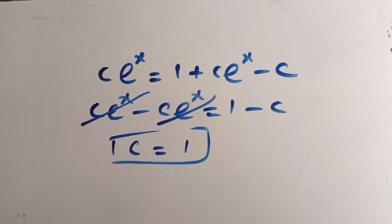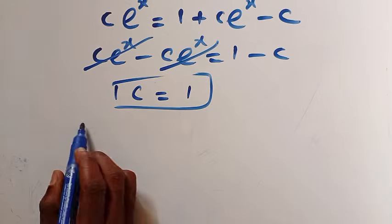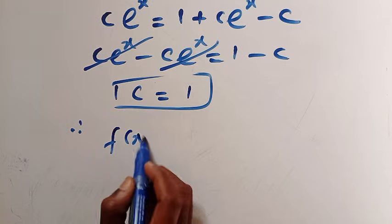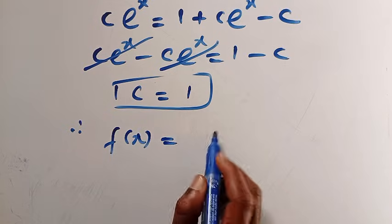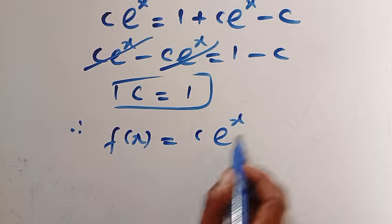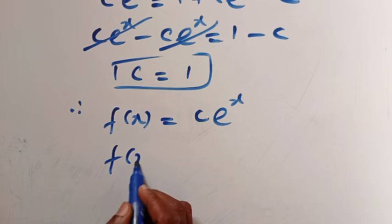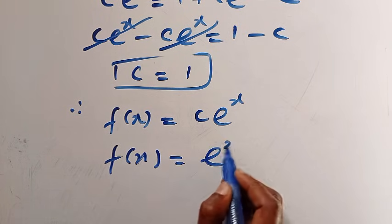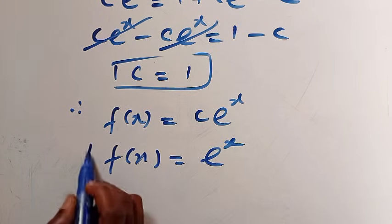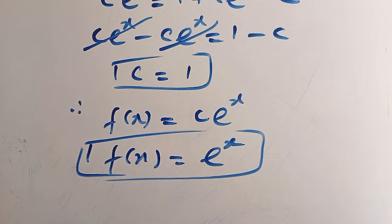So if C equals 1, then recalling from where we have f of x equals C e to the x, if C equals 1, then f of x equals e to the x. And this is the solution to the integral equation. Let's hear how you would solve this problem in the comment box, and don't forget to subscribe to this channel. See you in the next video.